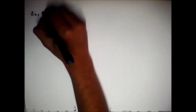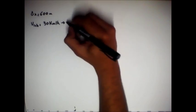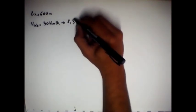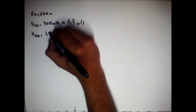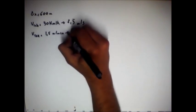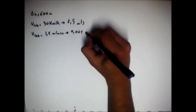Os dados que a gente tem aqui no problema são os seguintes: o espaço a percorrer é 600 metros; a velocidade da lebre é 30 km por hora, ou então 8,3 metros por segundo (com dízima periódica no 3); e a velocidade da tartaruga é 1,5 metro por minuto, que equivale a 0,025 metros por segundo.